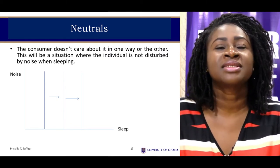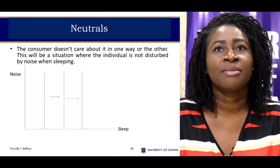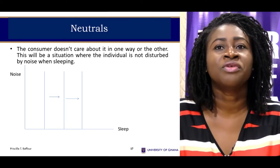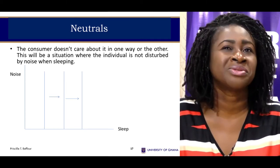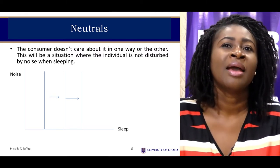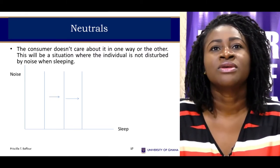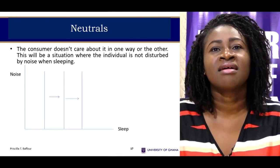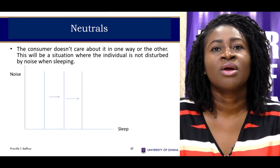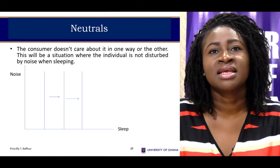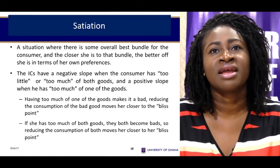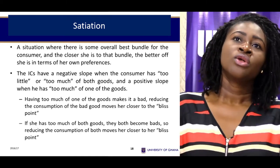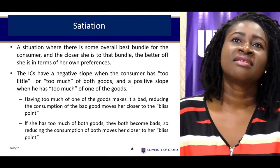If on the other hand noise does not disturb you, then noise is a neutral good to you. With neutral goods, the consumer does not care about that good but cares about the other good. This gives us vertical indifference curves, where moving to the right increases the quantity of the good the consumer does care about, and satisfaction increases as you move further to the right.